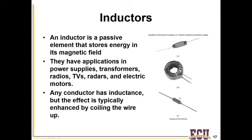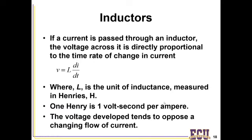In some cases, you don't always see the coils — they can be internal inside the inductor. Very similarly to the differential equation for the current-voltage relationship for capacitors, we also have one for inductors: V equals L·di/dt. Here, L is the inductance measured in Henrys, and di/dt is the change in current with respect to time, which informs the voltage. One Henry equals one volt·second per ampere. The voltage developed tends to oppose changing flows of current, so instantaneous changes are very important to think about.